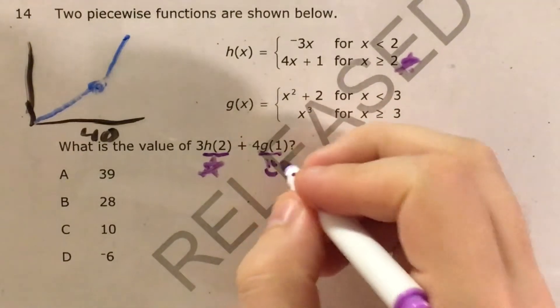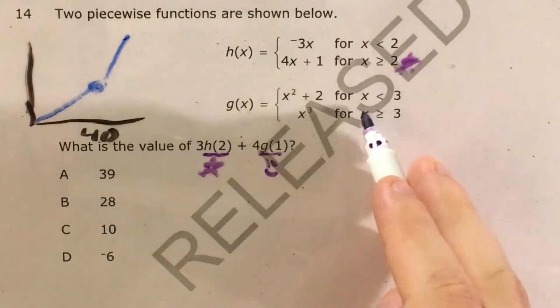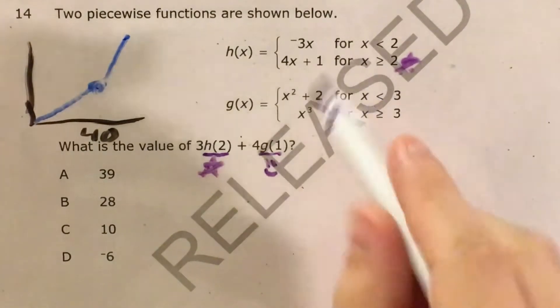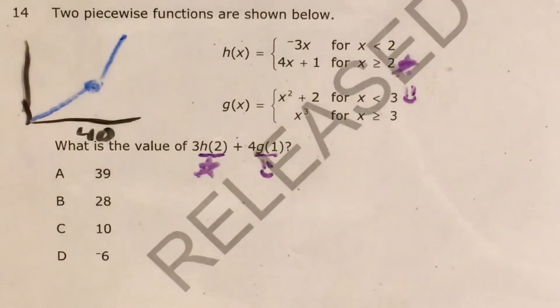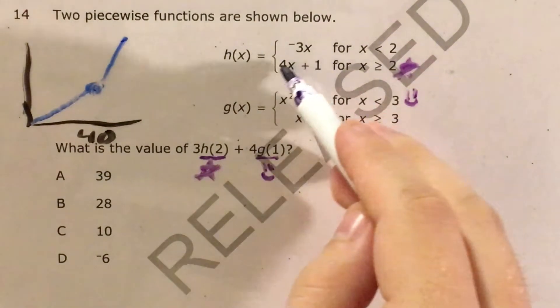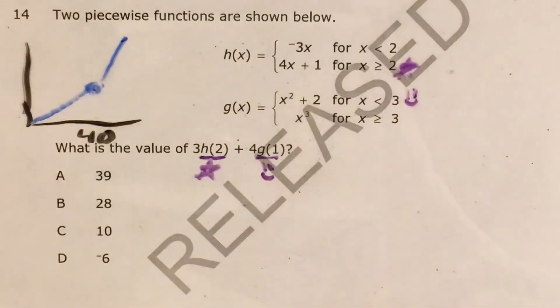And now G of 1, make a smiley face there, our x is 1, 1 is not greater than or equal to 3, 1 is less than 3. So we need to plug in 2 for this part of the h function and 1 for this part of the g function and do some more math from there.